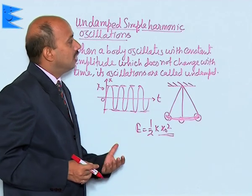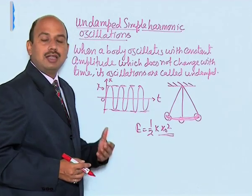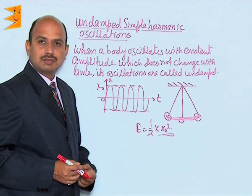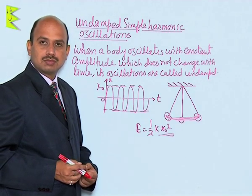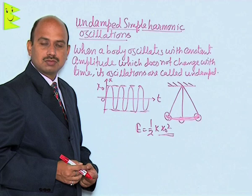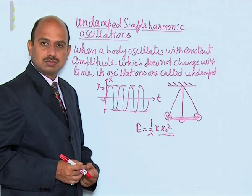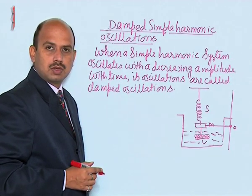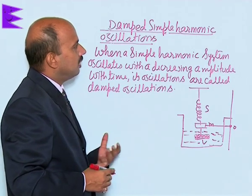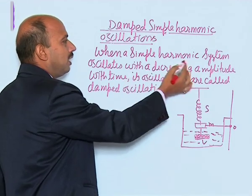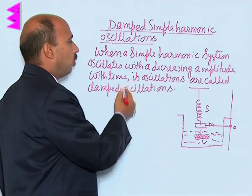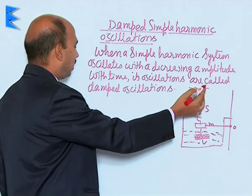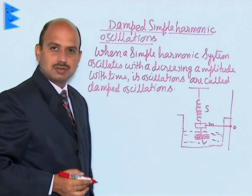This type of oscillation is known as undamped oscillation. Now, for damped oscillation — when a simple harmonic system oscillates with a decreasing amplitude over time, its oscillations are called damped oscillations.